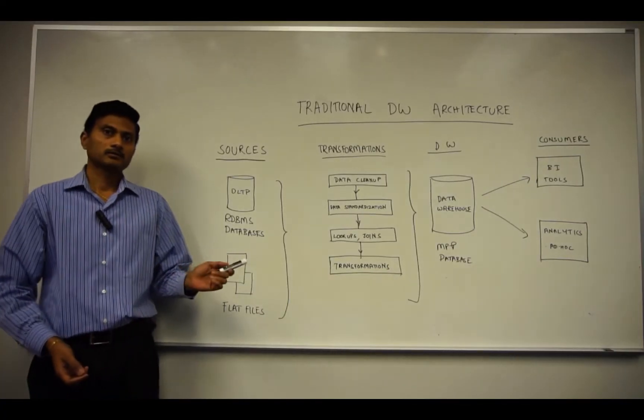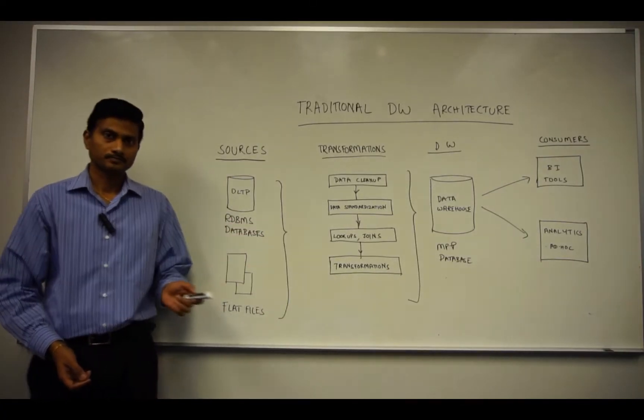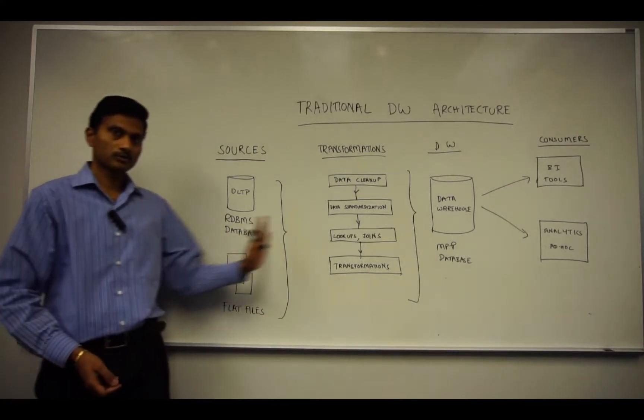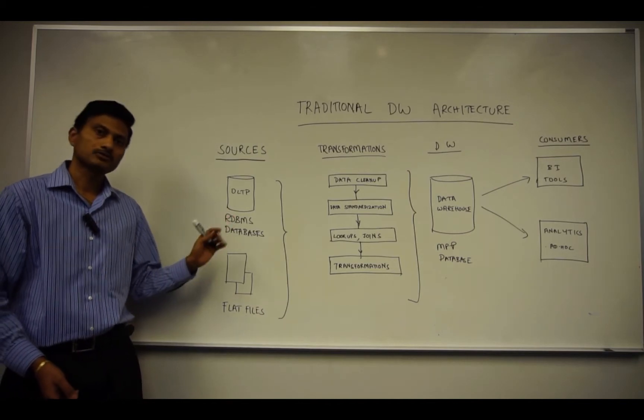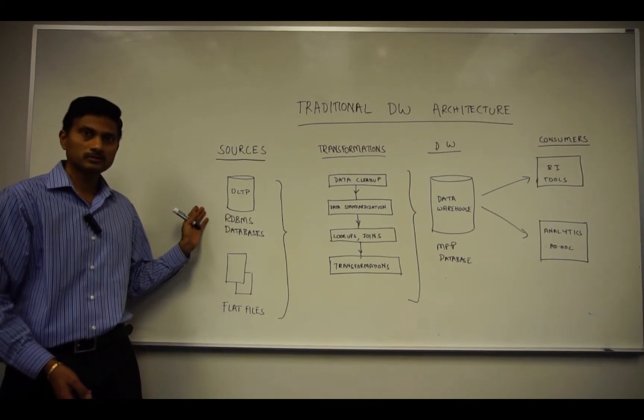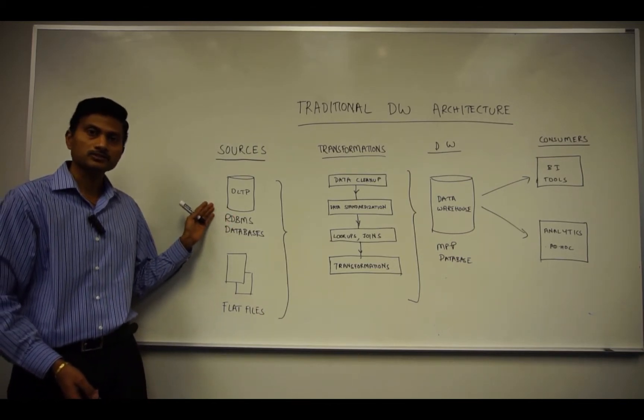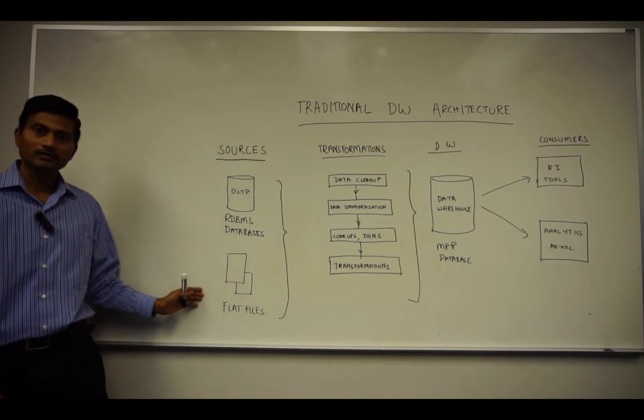Now let's look at a typical Data Warehouse architecture. We'll go from left to right. On the left, you see the various sources. Typical sources are relational databases, OLTP or transactional systems, and flat files.